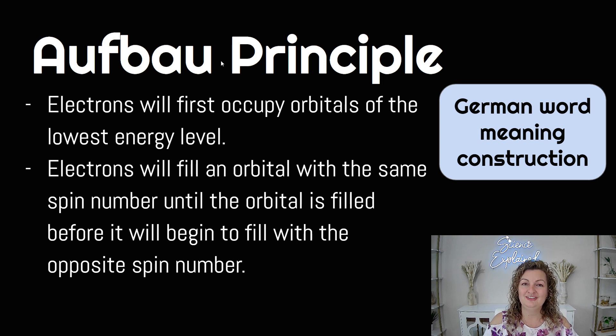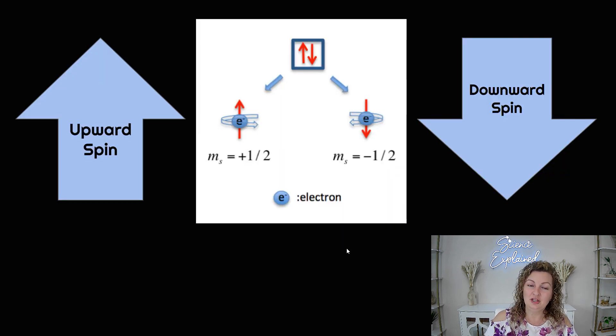And Aufbau is not a person, it's actually just a German word and it means construction. This may be confusing to you, let me explain it further. So electrons do spin, they're like rotating. So we say that they either have an upward spin or a downward spin. We are going to represent electrons in orbital diagrams with arrows. So if you see that there's an arrow going up or an arrow going down, that's an upward spin or a downward spin.